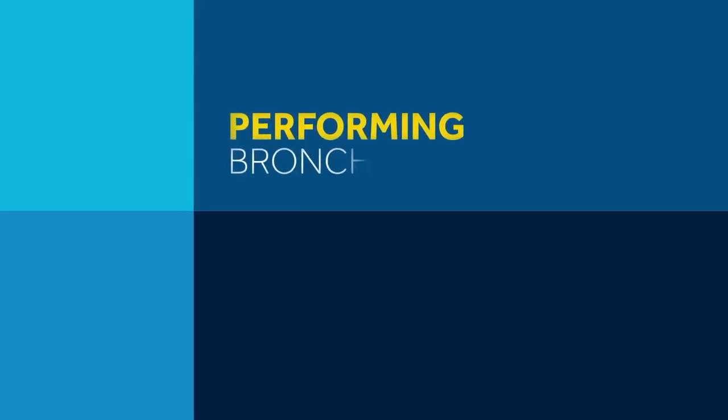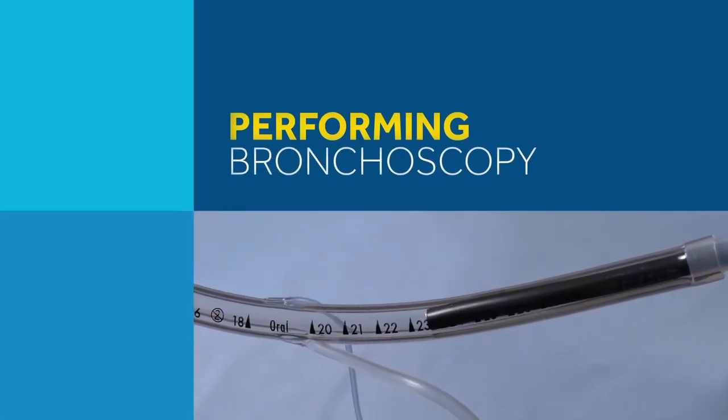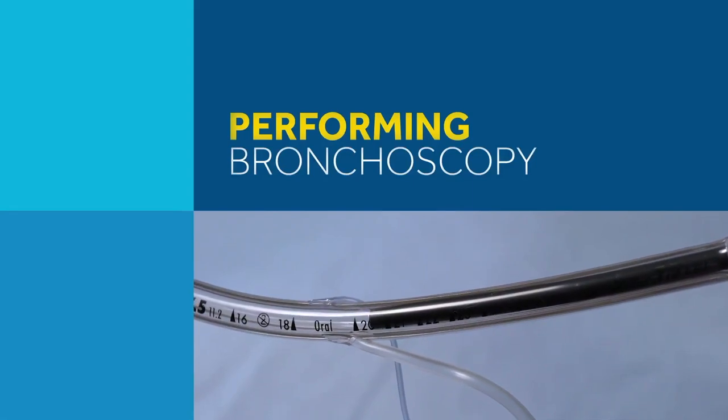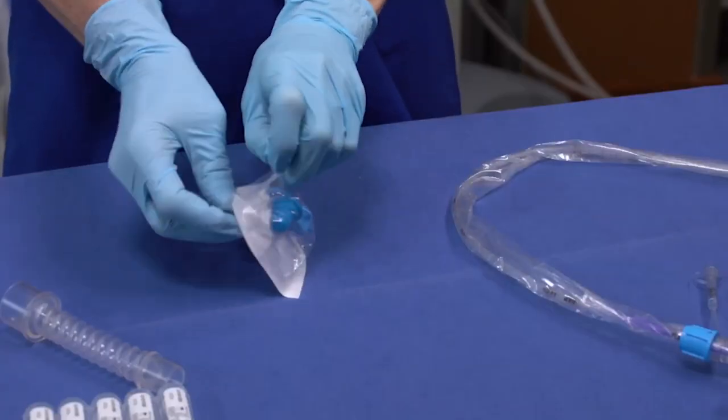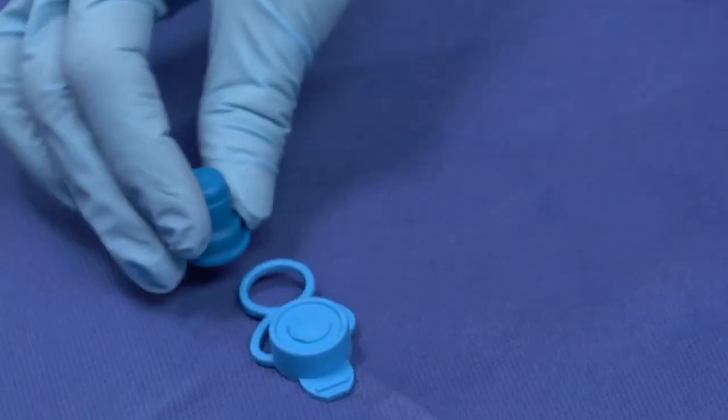The DAR closed suction system with replaceable catheter allows bronchoscopy or mucous sampling to be performed in a closed circuit. The DAR closed suction package includes two sterile caps to protect the suction catheter and the patient valve during this procedure.